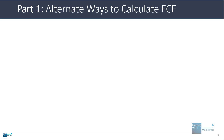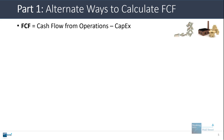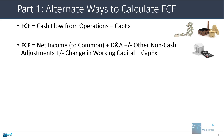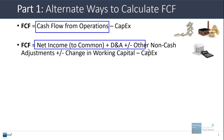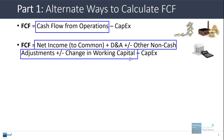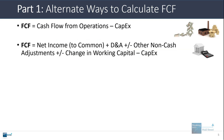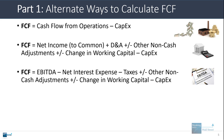Let's start with alternate ways to calculate free cash flow. The most basic method is to take cash flow from operations and subtract CapEx. Another way is to start with net income — or net income to common if there's preferred stock — add back D&A, adjust for other non-cash adjustments, factor in the change of working capital, and subtract CapEx. Or you could start with EBITDA: EBITDA minus net interest expense minus taxes, plus or minus other non-cash adjustments, plus or minus the change of working capital, minus CapEx.